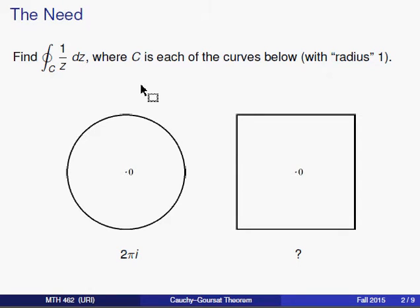Now let's keep in mind that by the Cauchy-Goursat theorem, if we had a different function we were integrating along, a function that was analytic everywhere inside the circle and on the circle, and inside the square and on the square, then these two integrals would have the same value. They'd both be 0.